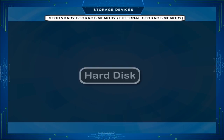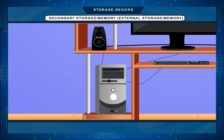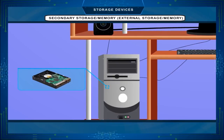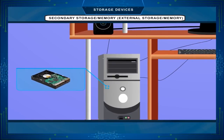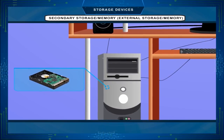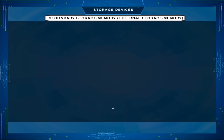Hard disk. The hard disk is the main storage device of a computer. It is located inside the system unit. All the work done on the computer is by default stored in the hard disk. It is used to store large amounts of data.